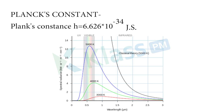Planck's constant H is equal to 6.626 into 10 to the power of minus 34 joules per second.